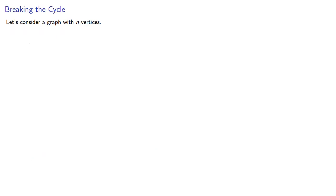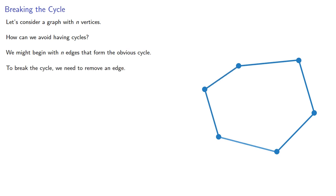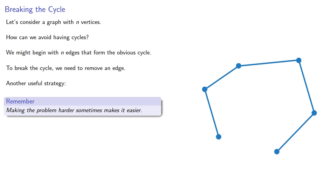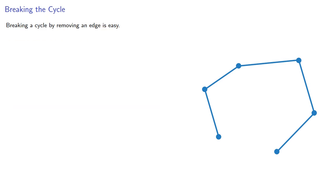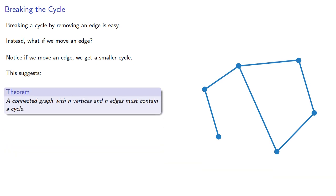Let's consider a graph with n vertices. How can we avoid having cycles? We might begin with n edges that form the obvious cycle. To break the cycle, we need to remove an edge. But here's another useful strategy: making the problem harder sometimes makes it easier. Breaking a cycle by removing an edge is easy. Instead, what if we move an edge so it joins different vertices? Notice that if we move an edge, we get a smaller cycle. This suggests a connected graph with n vertices and n edges must contain a cycle.